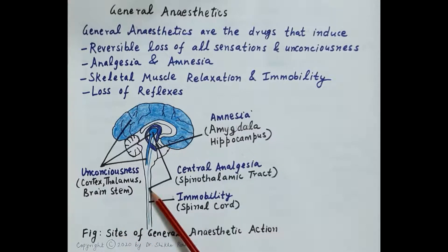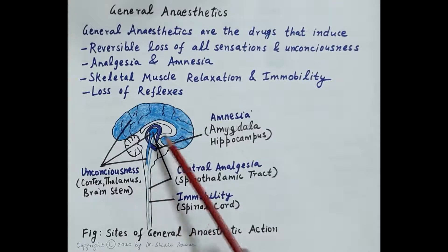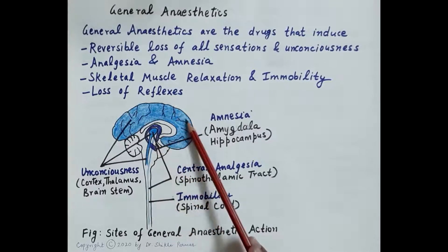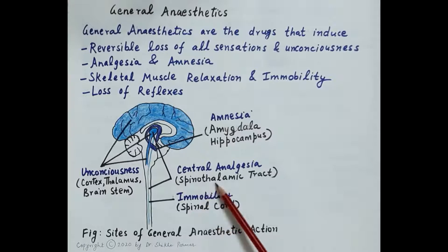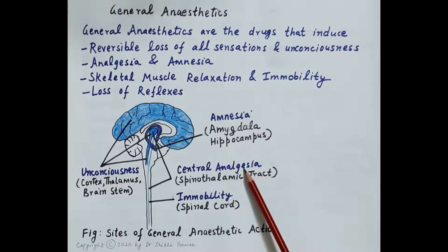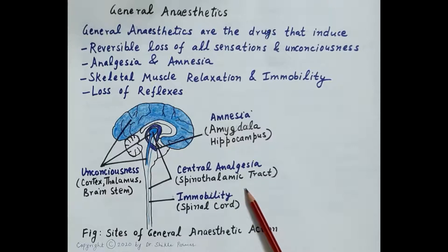Analgesia is produced by the inhibition of transmission of pain impulses from peripheral tissues to the spinal cord, and then inhibition of transfer of pain impulses from the spinal cord to the thalamus, and from the thalamus to the brain cortex. So inhibition of transmission of pain impulses in the spinothalamic tract is responsible for the induction of analgesia. Immobility is caused by the enhancement of GABAergic transmission in the spinal cord.